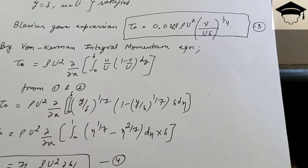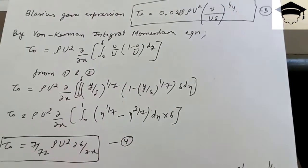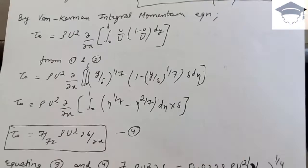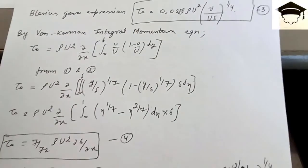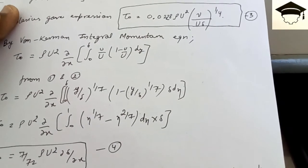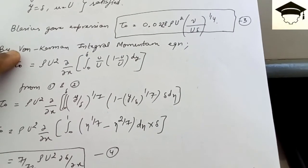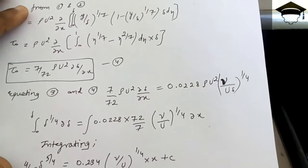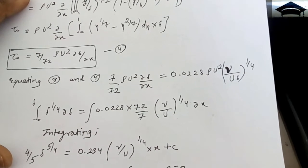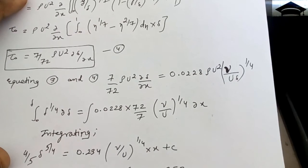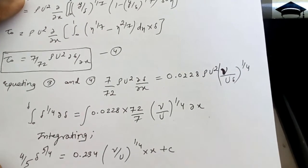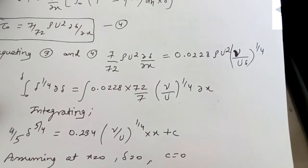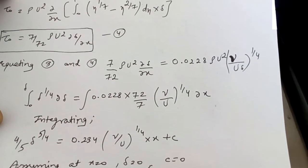Equating this with 0.0228 ρU² (ν/Uδ)^(1/4), and separating δ terms to one side and x terms to the other, then integrating: δ^(1/4) dδ = ∫₀ˣ 0.0228 × (72/7) × (ν/U)^(1/4) dx. After integration: (4/5) δ^(5/4) = 0.234 (ν/U)^(1/4) x + C.